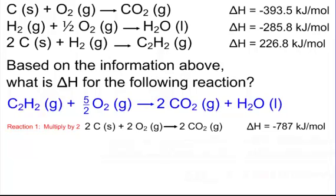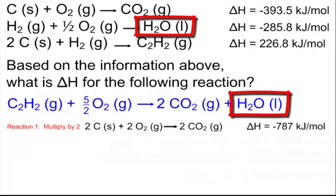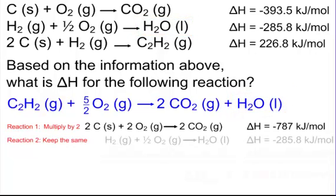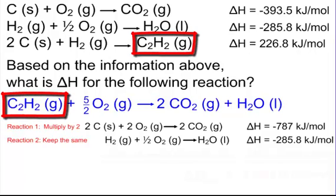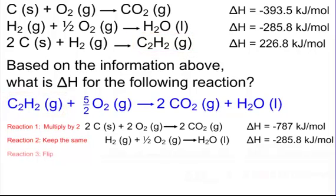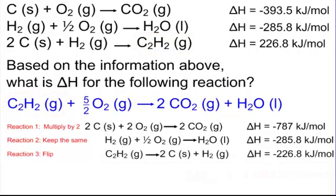For reaction two, I zero in on the water. There's one mole of water on the product side, and I want one mole of water on the product side in my target — so I don't need to do anything. The delta H stays exactly the same. For reaction three, I zero in on C₂H₂. It's on the product side, but I want it on the reactant side. So I flip reaction three: C₂H₂ goes to the reactants, and the two carbons and hydrogen gas go to the products. The sign flips from positive 226.8 to negative 226.8.